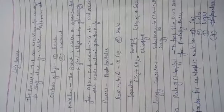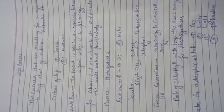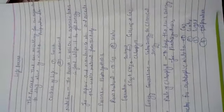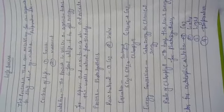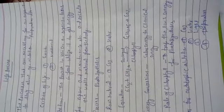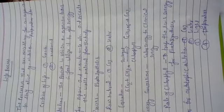The food making process is called photosynthesis. Photosynthesis me raw materials: carbon dioxide and water. The process involves carbon dioxide plus H2O in the presence of sunlight and chlorophyll to make carbohydrates and release oxygen.